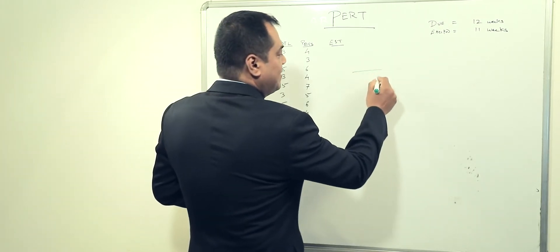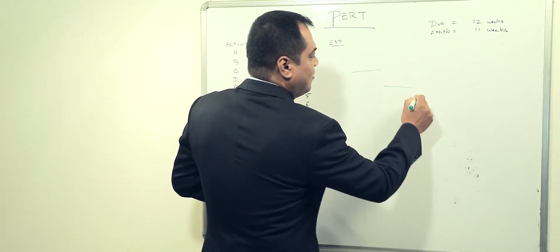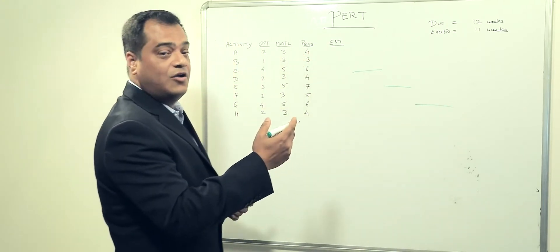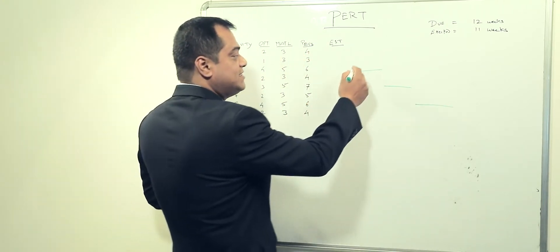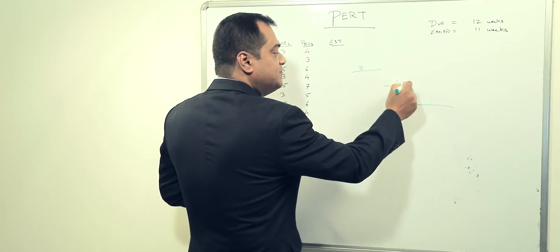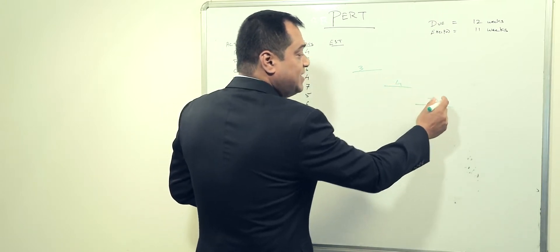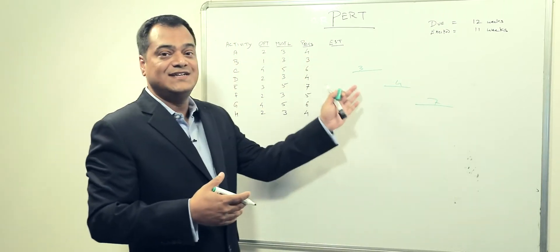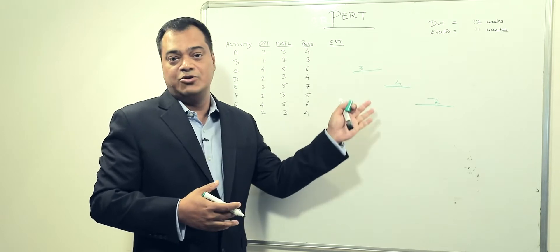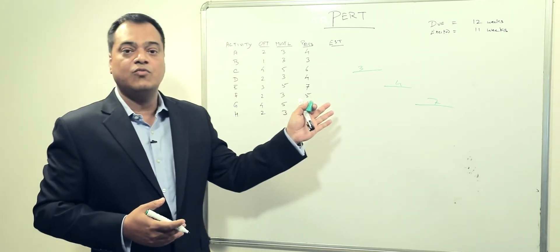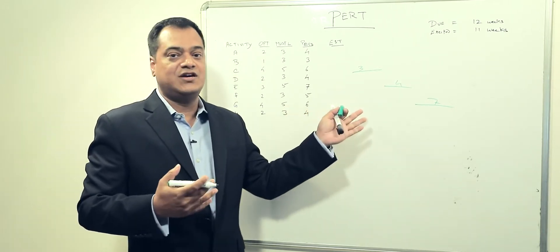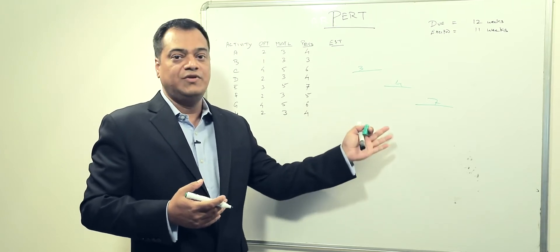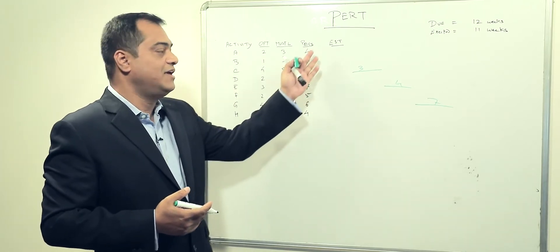In a Gantt chart, each bar has a known time frame — three days, four days, seven days, whatever. We are working with certainty in a project when using a Gantt chart or critical path, because we know the duration.